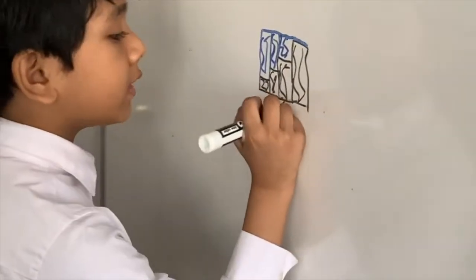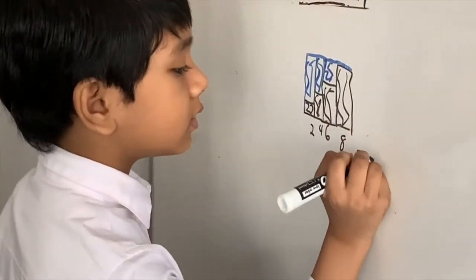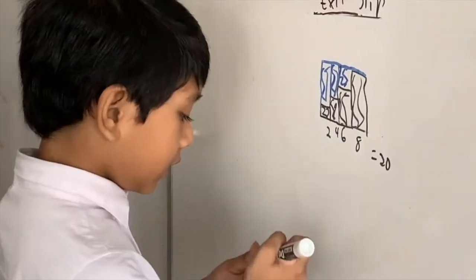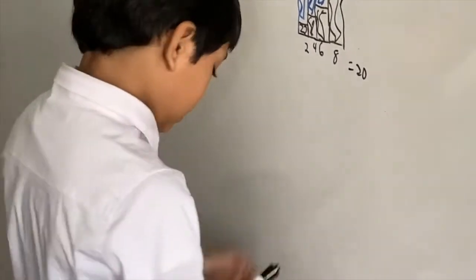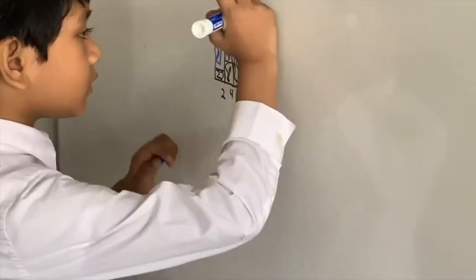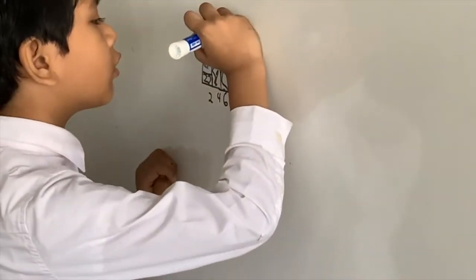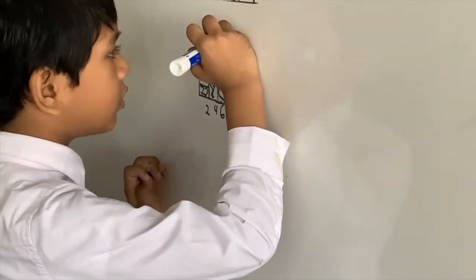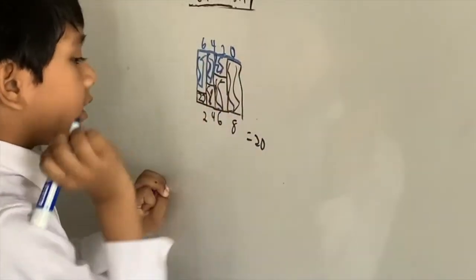So we know this is overestimation, 2, 4, 6, 8. And this is underestimation, so let's write that in blue, 0 through 2, 4, 6.